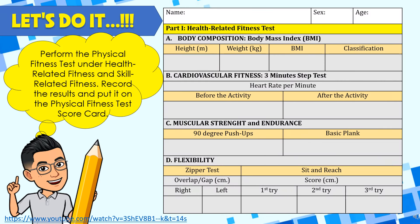Let's do it! Perform the physical fitness test under health-related fitness and skill-related fitness. Record the results on the physical fitness test scorecard — you can copy the scorecard into your notebook before doing the test. Write your name, sex, and age. This is Part 1 under health-related fitness. A. Body composition — your Body Mass Index (BMI). Record your height and weight, the computed BMI, and your classification based on the previous activity.